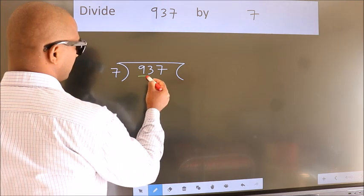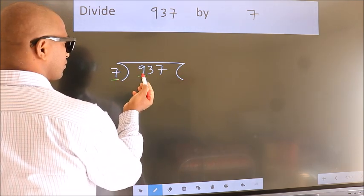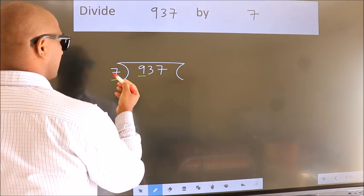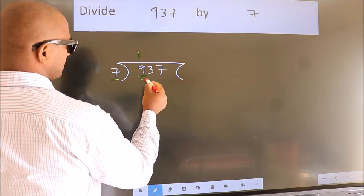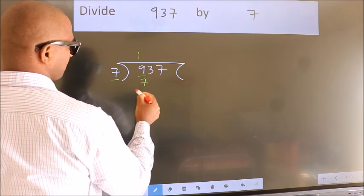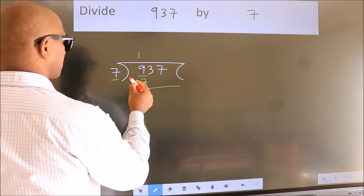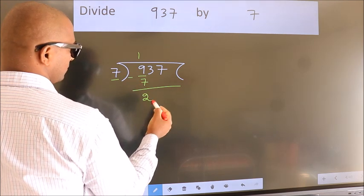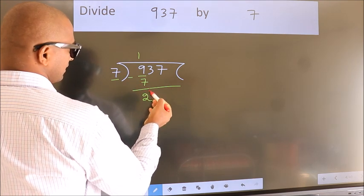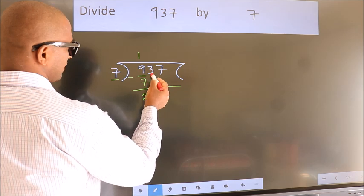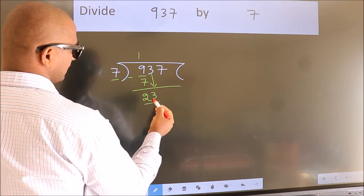Here we have 9, here 7. A number close to 9 in the 7 times table is 7 once 7. Now we should subtract — we get 2. After this, bring down the beside number. So 3 comes down, giving us 23.